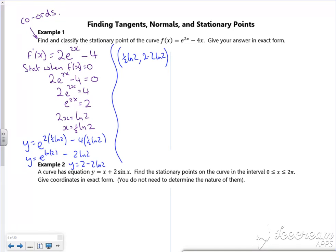I've got my stationary points, so now I want to classify them. Remember to classify them if they're max or min, I want to find the second differential. So f''(x). If I differentiate the 2 times e^(2x), I get 2 times 2 e^(2x). So 4e^(2x). And the minus 4 disappears. Right, so I'm going to put in my x equals a half ln2.